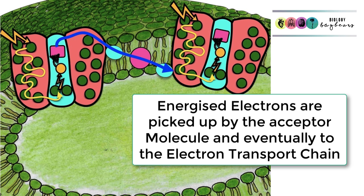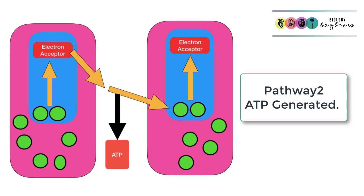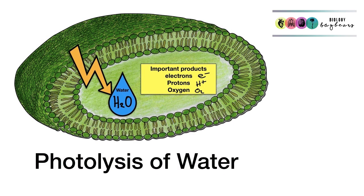The electrons continue on to photosystem 1. You can see what has happened so far in pathway 2. Basically, the electrons have been energized, they've passed over an electron transport chain, generating a bit of ATP in the process, and now they've been passed into photosystem 1. We're halfway through pathway 2.